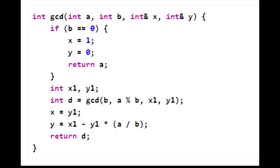Otherwise, we are going to create the two new variables X1 and Y1. Then what we're going to do is we are going to get the GCD of the values recursively calling the function and pass in X1 and Y1 by reference as X and Y.